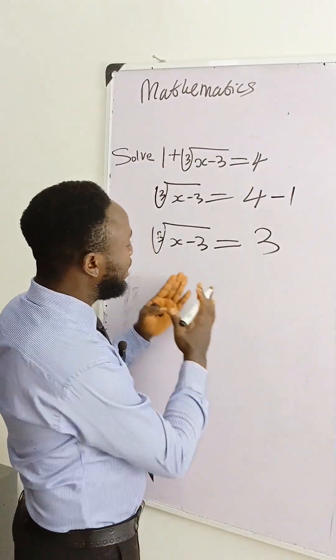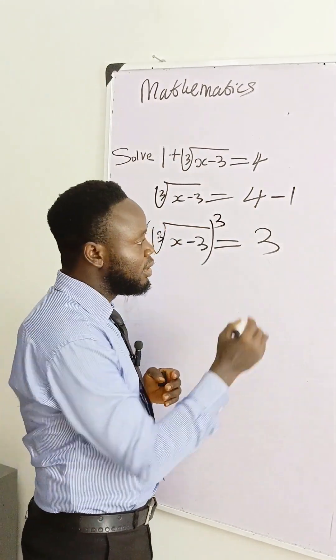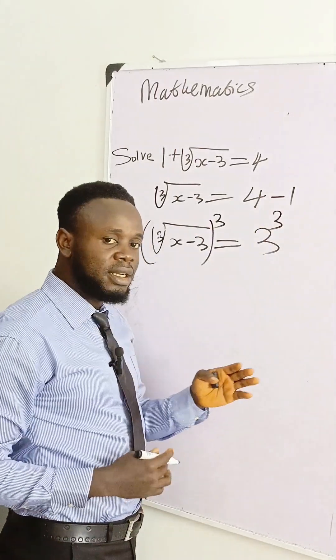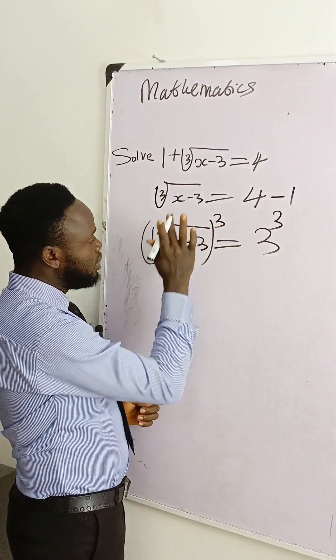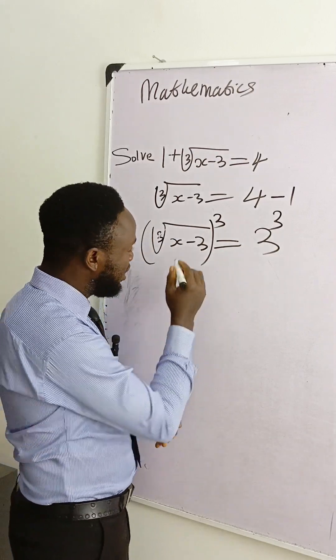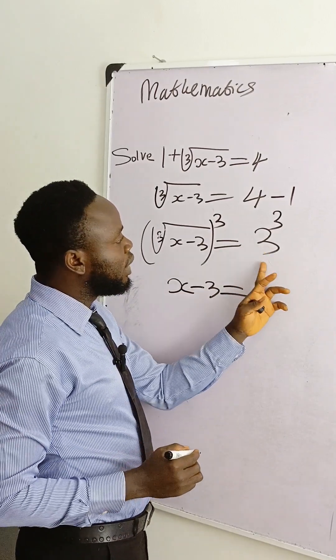Now the next thing, because we have cube root here, let's take the cube of both sides, both the right hand side and the left hand side. What I mean is this: take the cube of this one, take the cube of this one. That's raised to power 3. If you take the cube of cube root, the cube root there will disappear.